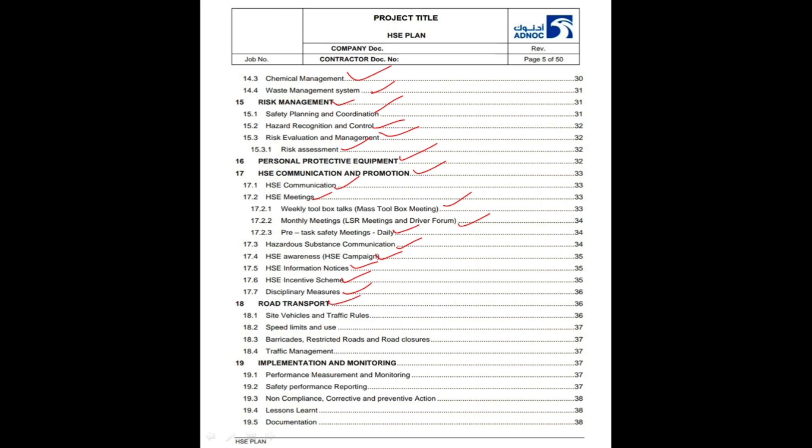Road Transport. In this section will be included: site vehicles and traffic rules, speed limits and use of barricades, restricted roads and road closures, and traffic management.